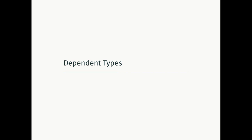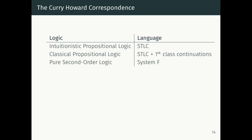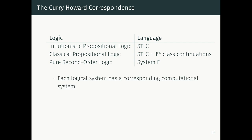And so now we're going to move on to dependent types. Dependent types are going to be like the most sophisticated instance of the Curry-Howard correspondence that we're going to see in this course. What we've seen so far: intuitionistic propositional logic corresponds to the simply typed lambda calculus; classical propositional logic corresponds to the simply typed lambda calculus plus first-class continuations; and pure second order logic corresponds to the polymorphic lambda calculus, or System F.